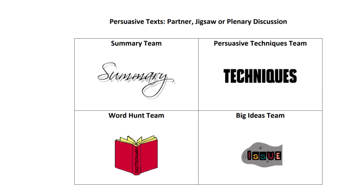We've been doing a lot of studying about how authors create persuasive texts and now it's time to put it all together. So we're going to get into four teams and we're going to look at a persuasive text together, read it, and then you're going to tell us what you know afterwards to the whole class when you've had a chance to do your team jobs.